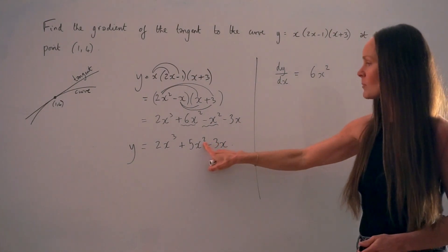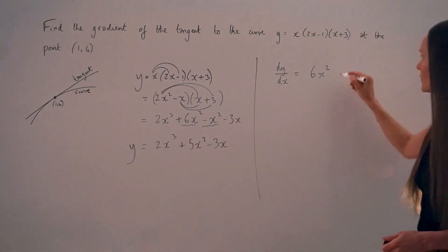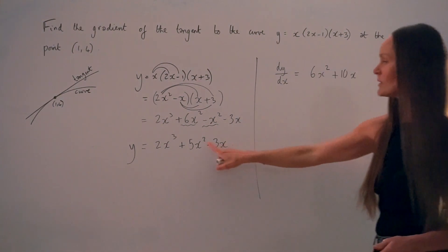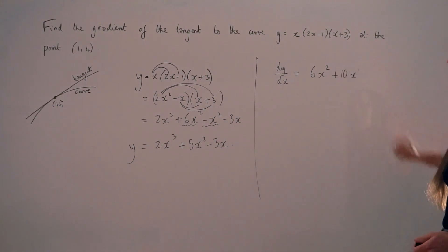Then if I look at the next term, 2 multiplied by positive 5 is 10. And again, the power decreases by 1, so I'm left with positive 1. Although you don't actually have to write it, you can just leave it as x.